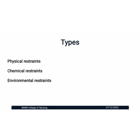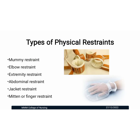There are three major classifications of restraint: physical restraints, chemical restraints, and environmental restraints. There are different types of physical restraints: mummy restraint, elbow restraint, extremity restraint, abdominal or belt restraint, jacket restraint, and mitten or finger restraints.